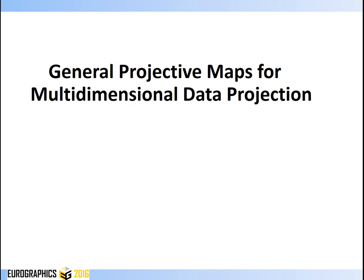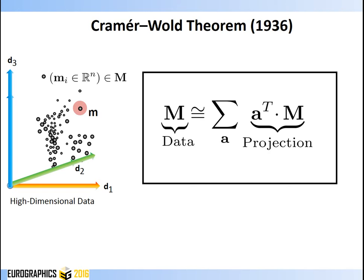Let us start by thinking about how useful a projection-based analysis of data can be. In 1936, the Cramér-Wold Theorem was established: assuming an n-dimensional data set, the convergence of multivariate random numbers can be explained by the convergence of univariate random numbers, meaning that the set of projections perfectly explains the properties of an n-dimensional data set. Thus, the Cramér-Wold Theorem tells us that we can and should consider projections in the data analysis process.